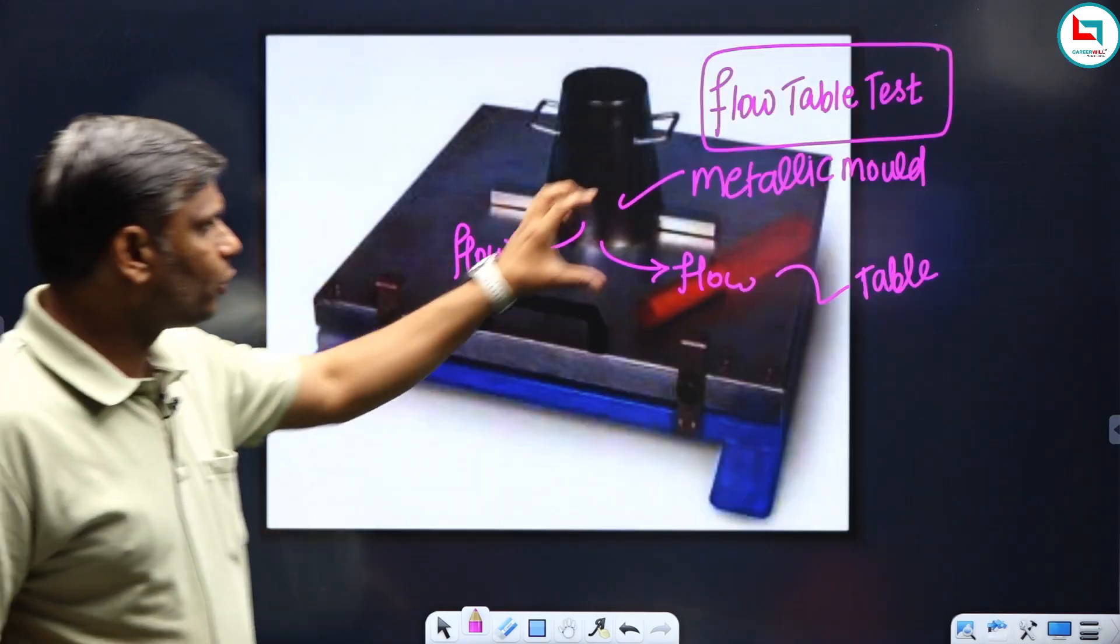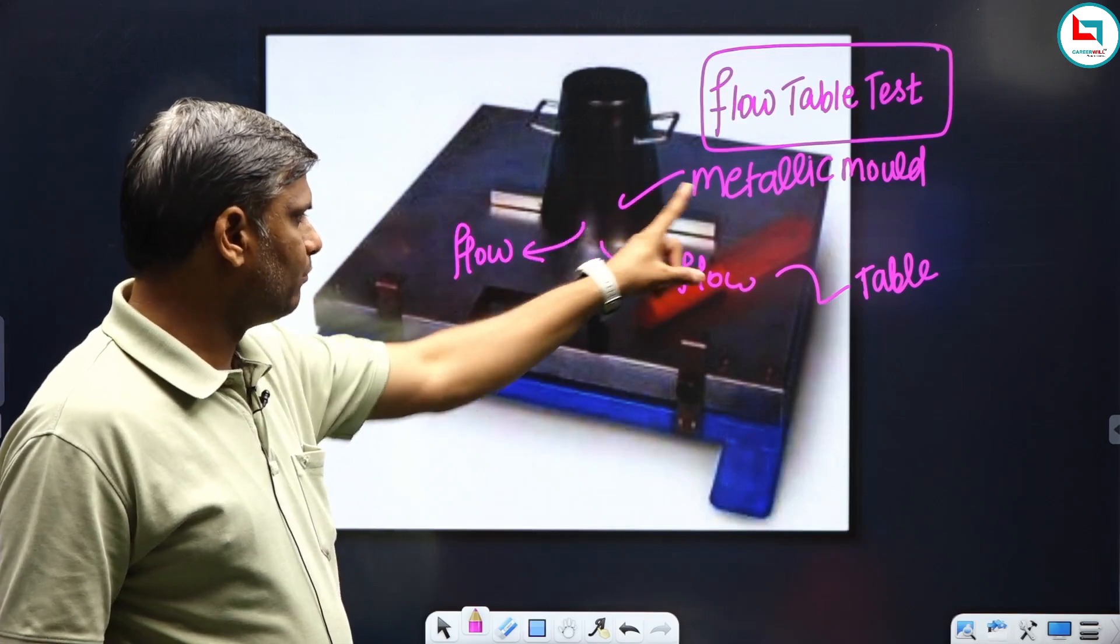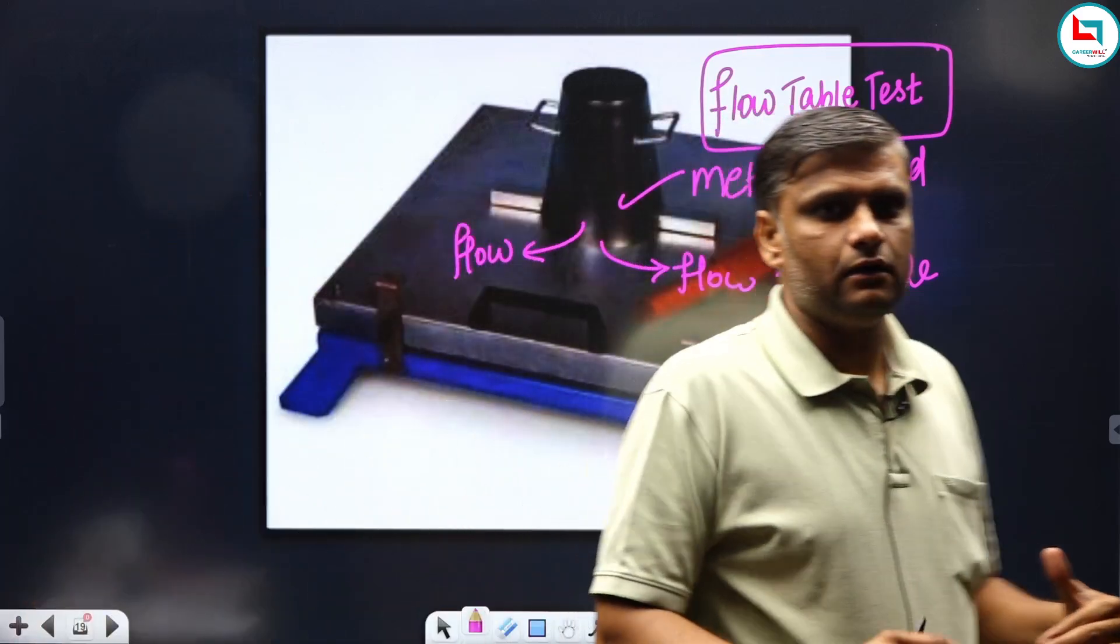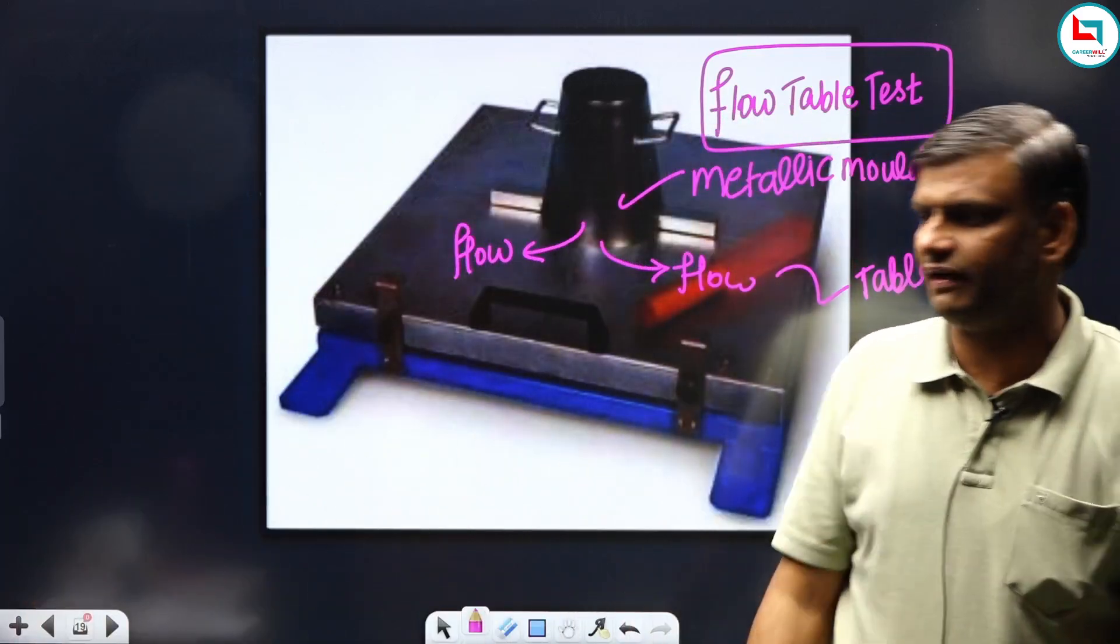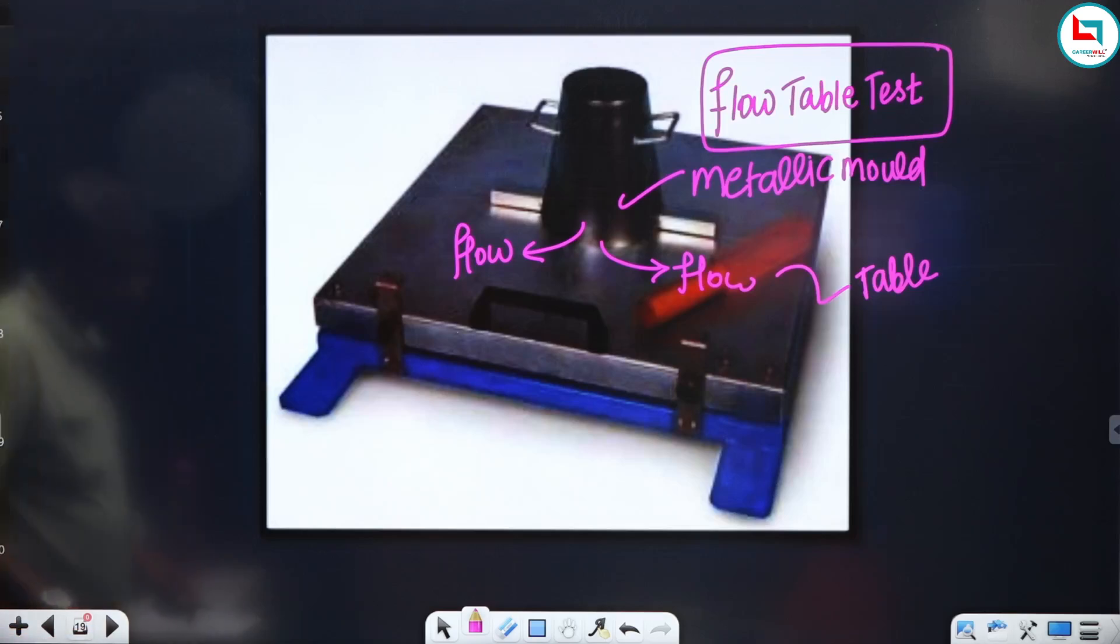So this flow table test - this is my center table, this is my metallic mold, this is my flow table. So I will tell you the flow. You can calculate the value of the slump.